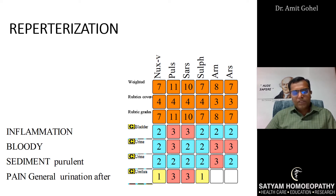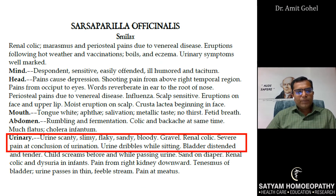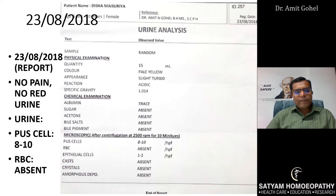However, the patient specifically mentioned that at the very end of urination she had severe pain at the meatus. I found this described beautifully only in Boericke's Materia Medica under Sarsaparilla — where it states the urine is scanty, slimy, flaky, sandy, with gravel, renal colic, and severe pain at the conclusion of urination. This was the PQRS of the patient, so I prescribed Sarsaparilla 200 for two days, twice daily dose, and advised her to go for urine analysis on 23rd August.